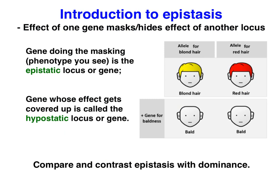Epistasis refers to two genes interacting so that one gene masks or hides the second gene. The gene that is doing the masking — the phenotype that you can see — is the epistatic gene. The one whose effect gets covered up is hypostatic: epi for above, hypostatic for below.